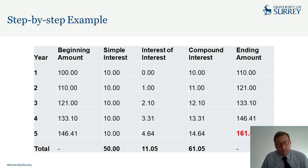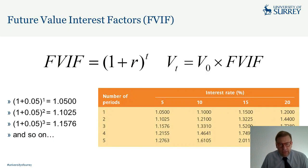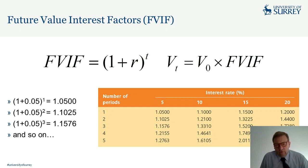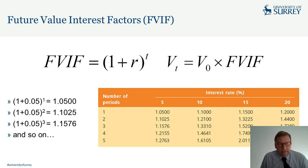In practice, there are pre-calculated tables showing the factor (1 + r)^t for different interest rates and periods, useful when Excel or a calculator is not available. For example, (1.05)^1 = 1.05, (1.05)^2 = 1.1025, and so on, allowing you to quickly find the future value. There is also a useful graph comparing compound interest growth versus simple interest growth — the compound line curves upward significantly while simple interest remains perfectly linear.